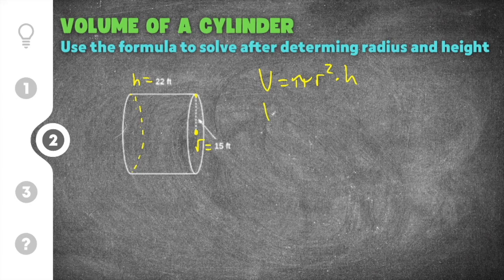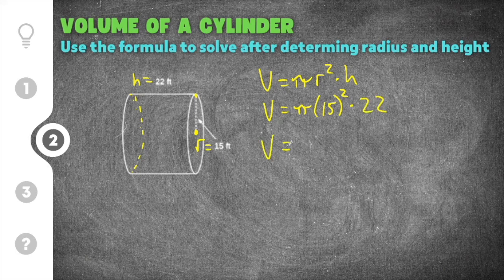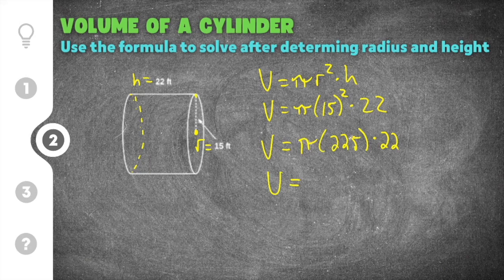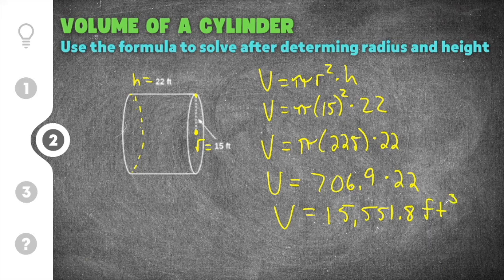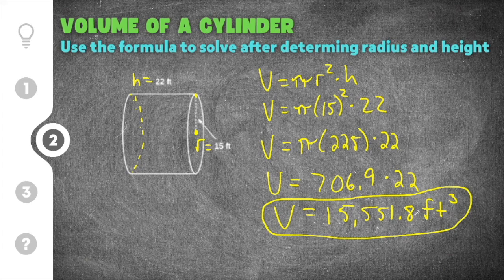Now that I know radius and height I can substitute them into the formula: volume equals pi times 15 squared times 22. Order of operations first — 15 squared is 225, giving pi times 225 times 22. Pi times 225 equals approximately 706.9, and 706.9 times 22 gives 15,551.8. The final volume of the cylinder is 15,551.8 feet cubed.